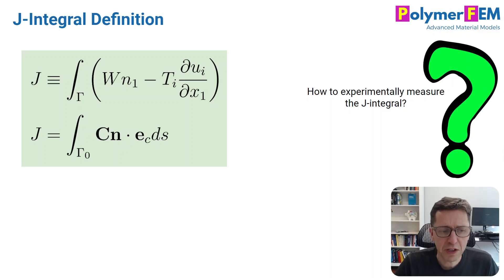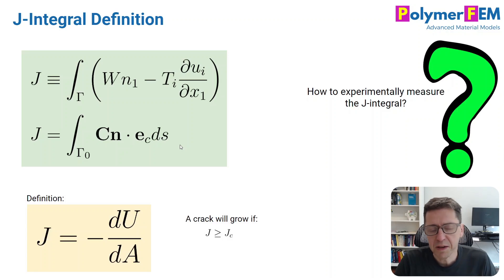Now these are very nice expressions, but how do we measure these things? What do we do experimentally to actually measure these quantities? To describe how we do that, we need to go back to the definition of the J-integral a little bit. What is it all about?